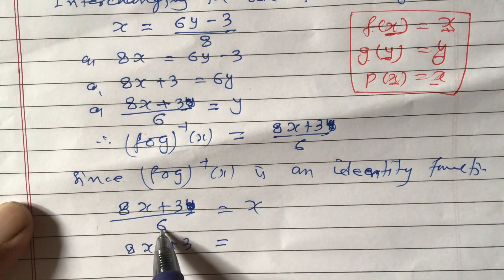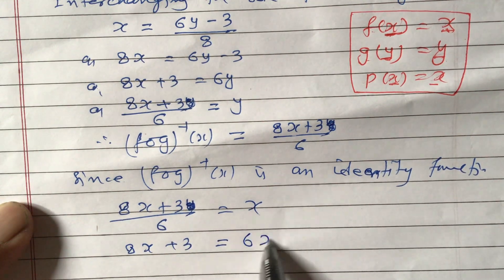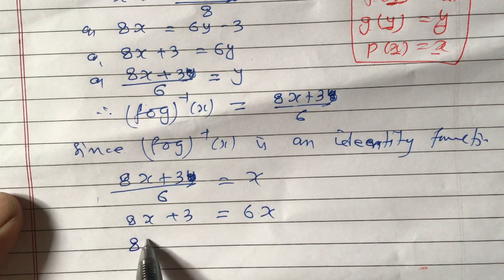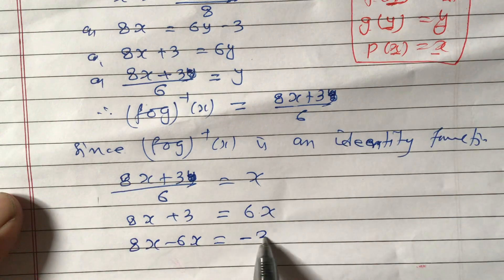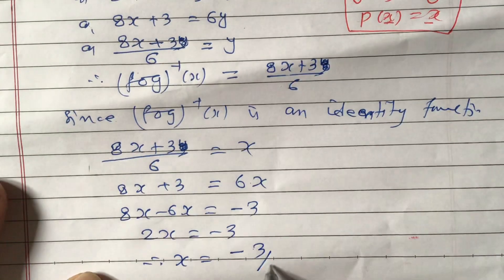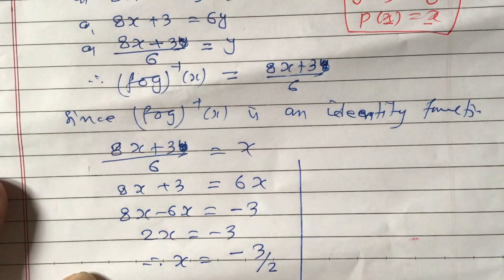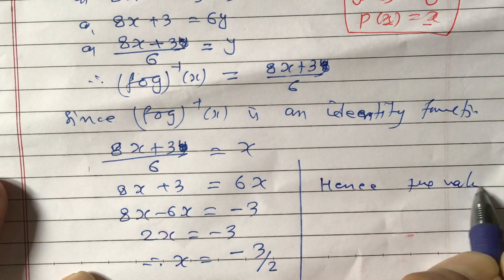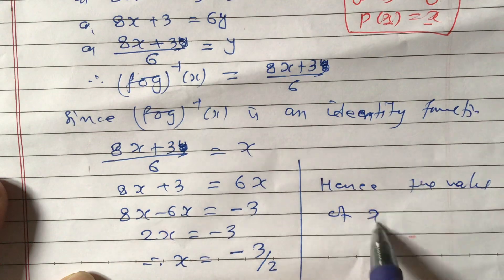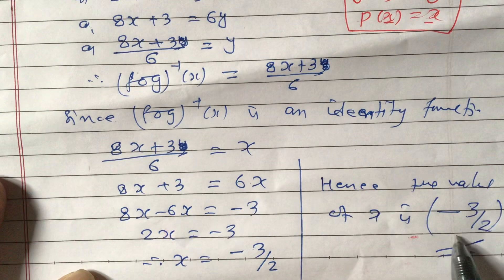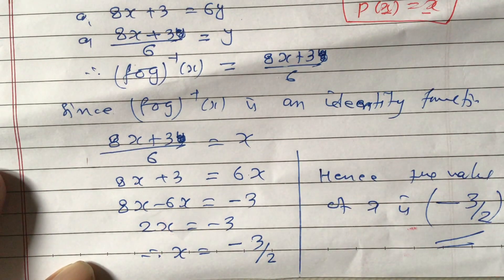So 8x plus 3 equals 6x. Bringing 6x to the left side: 8x minus 6x equals minus 3, which gives 2x equals minus 3. Therefore x equals minus 3 by 2. Hence, the value of x is -3/2. This is our answer. Thank you for watching this video.